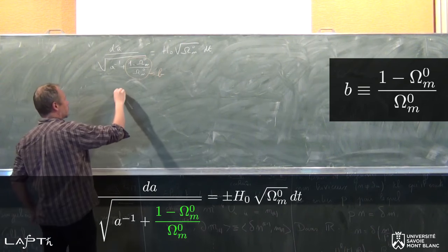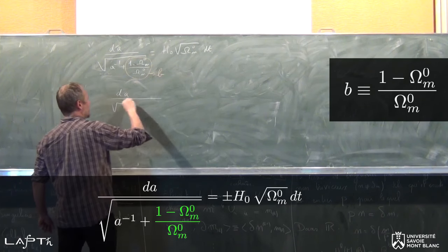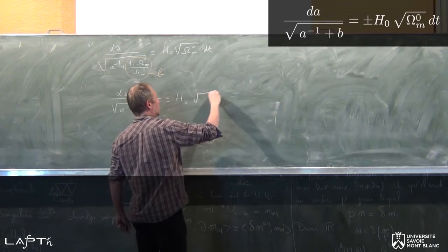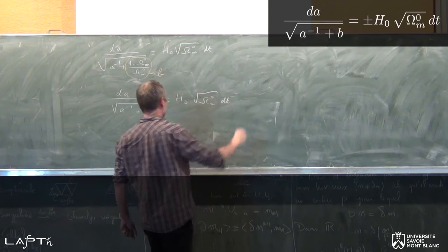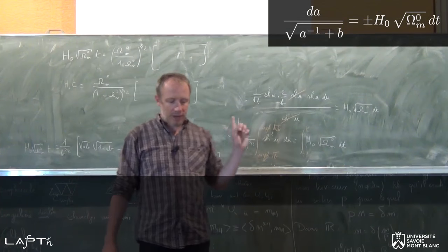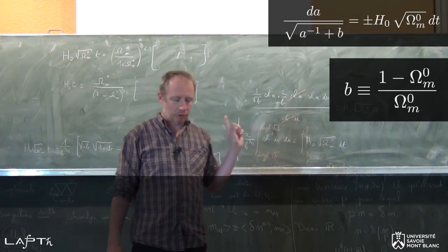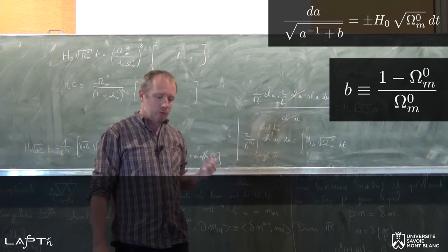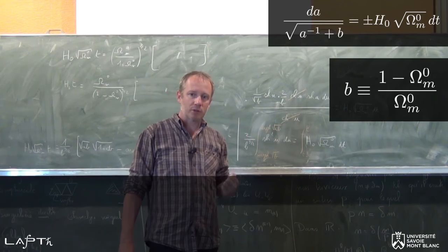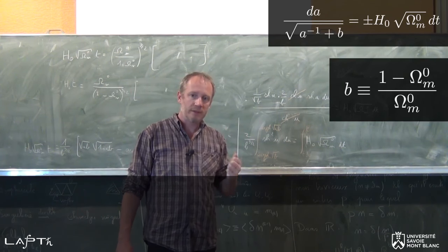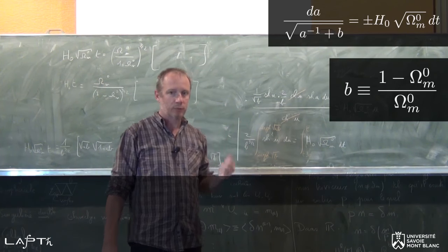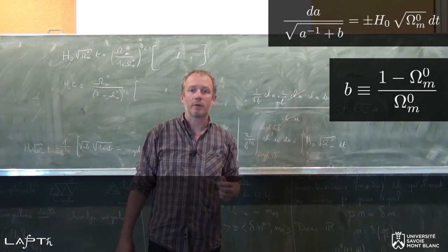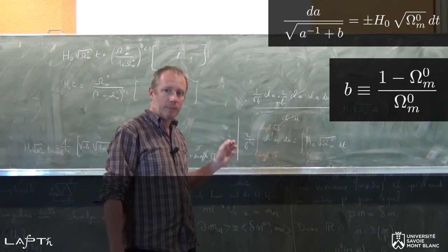Ce que je veux résoudre comme équation différentielle, c'est relativement simple : dA sur racine de A⁻¹ plus b est égale à H₀ racine de Ω_M0 dt. Dans tout ce qui va suivre, je vais me placer dans la situation où le paramètre petit b est positif. Les changements de variable que je vais faire ne sont plus corrects si b est négatif. Donc là, pour l'instant, b est positif.